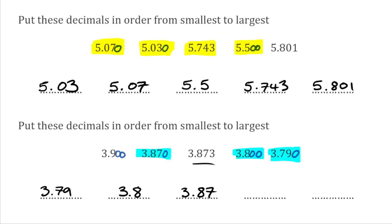Then our final one of the 8s was 3.873 — that's our fourth solution, written as 3.873. And finally all we've got left is 3.900, which we were given as 3.9. And that would be the final solution to that one.